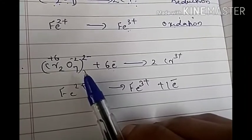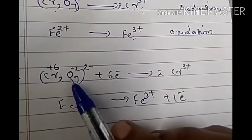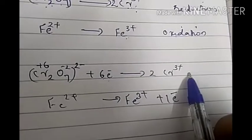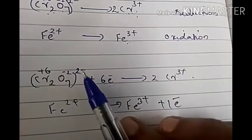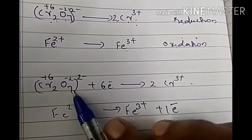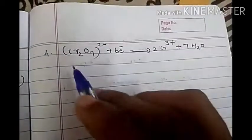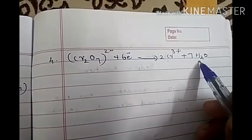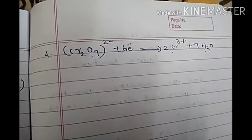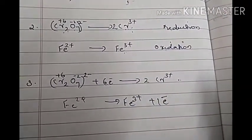In Step 4, we balance the number of oxygen atoms. In the reduction half-reaction, there are 7 oxygen atoms on the reactant side and none on the product side. Since the reaction is in acidic medium, we add water molecules to the product side to balance oxygen. We need 7 water molecules, so the equation becomes: Cr₂O₇²⁻ + 6e⁻ → 2Cr³⁺ + 7H₂O. In the oxidation half-reaction, there are no oxygen atoms on either side, so no water molecule needs to be added: Fe²⁺ → Fe³⁺ + e⁻.